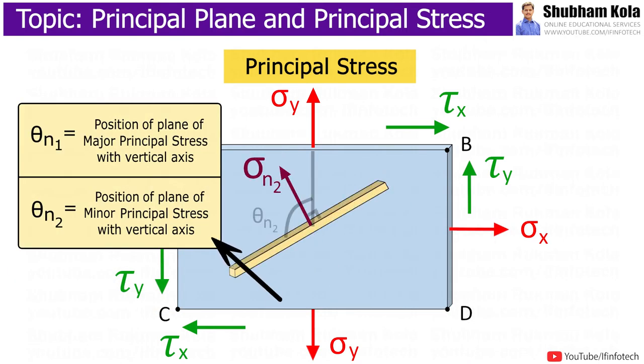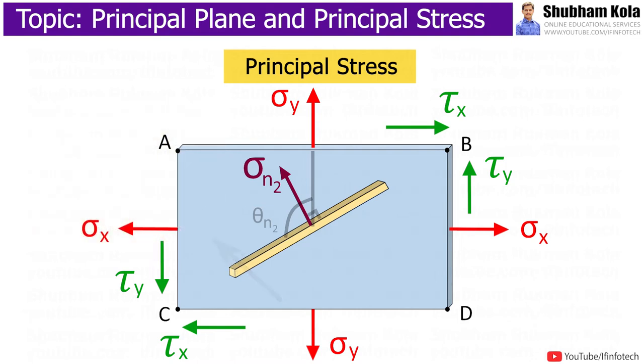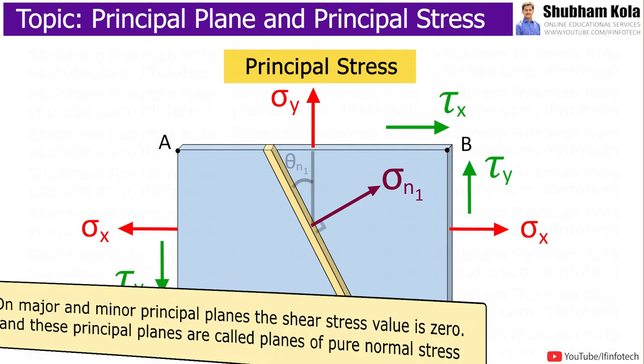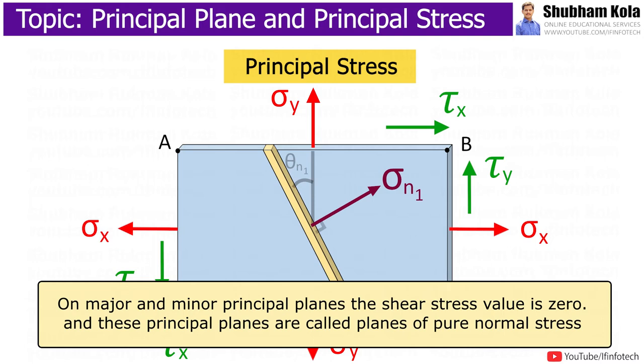Theta n1 and theta n2 will give positions of planes of major principal stress and minor principal stress. So, these principal stresses are going to govern the failure condition of your component. On major and minor principal planes, the shear stress value is zero. And these principal planes are called as planes of pure normal stress.